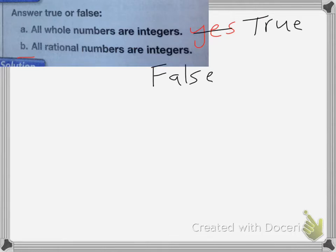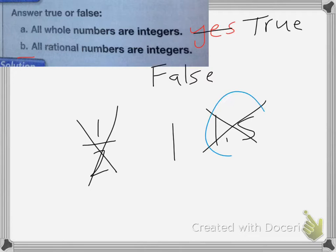All rational numbers are not integers, because ½ is not an integer. 1 is, but 1.5 is not an integer. However, both 1.5 and ½ are rational numbers. That's it for this lesson.